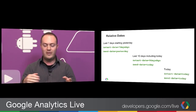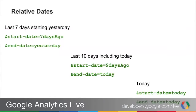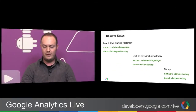A simple example: if you always want today's data, you would set both the start date and end date to today. One important thing to note is that this is based on the time zone set in your particular profile. If you're set for Pacific Time, these relative dates will be resolved to real dates based on that time zone. It's a pretty straightforward, simple feature, but it definitely gives you more flexibility in how you set up your reports.